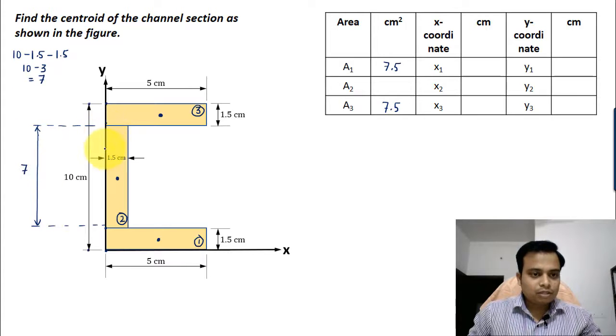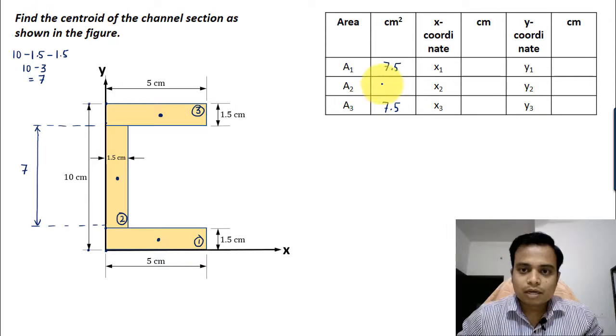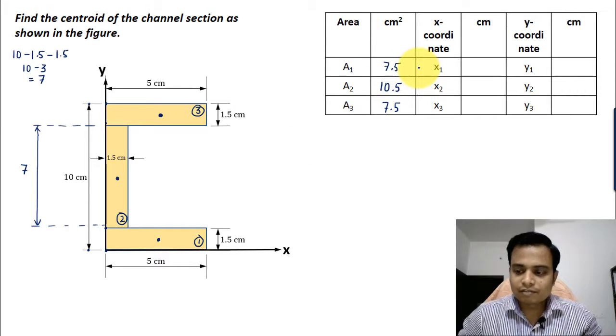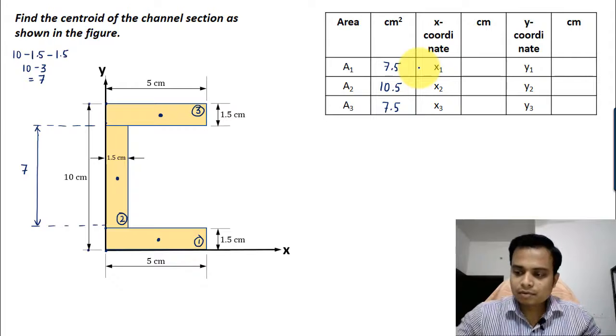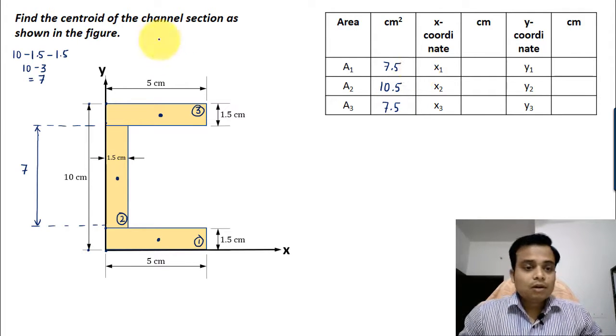Now we know this is 7 and this is 1.5, so 7 multiplied by 1.5 will give you 10.5 for A2.